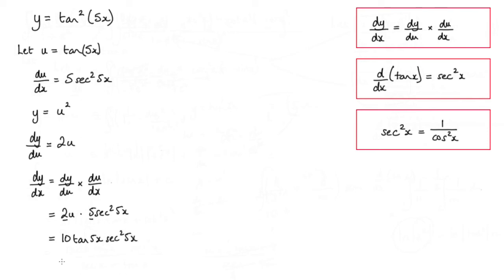Now we can simplify a little bit further. So just heading over here. We've still got the 10. Tan of 5x we can write as sin 5x over cos 5x. And then sec squared 5x, well that's going to be 1 over cos squared 5x. They're all multiplied. So what we end up with is we've got 10 sin 5x, and that's all over cos cubed 5x.